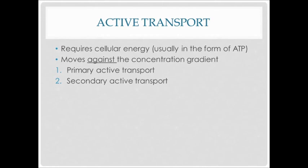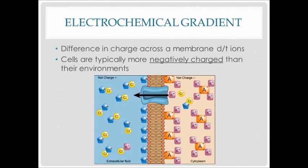The two main types of active transport are primary active transport and secondary active transport. First we need to establish a knowledge of the electrochemical gradient. There is a charge difference at the plasma membrane due to a different number of ions moving from the extracellular environment to the intracellular environment, and vice versa. Cells are typically more negatively charged than their environments because there tends to be more sodium leaving than there is potassium coming in, so we're losing more cations to the extracellular environment than we're bringing back in.